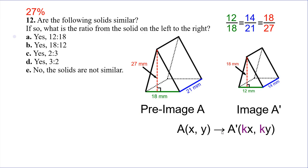Number twelve: are the following solids similar? To see if they're similar, we need to check the extended ratio to make sure corresponding sides are growing by the same scale factor. Here we have the pre-image and then the image of the dilation. We look at: twelve over eighteen for the first pair, fourteen and twenty-one for the second, and eighteen and twenty-seven — they're also corresponding. All three of these fractions reduce down to two-thirds. That tells us they all have the same scale factor, so yes, they are similar.